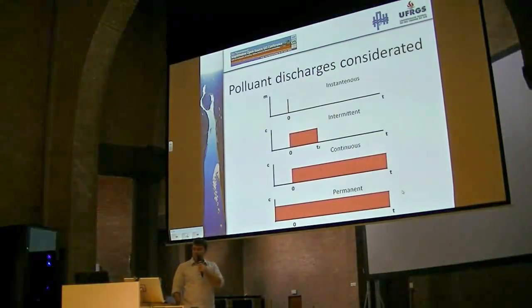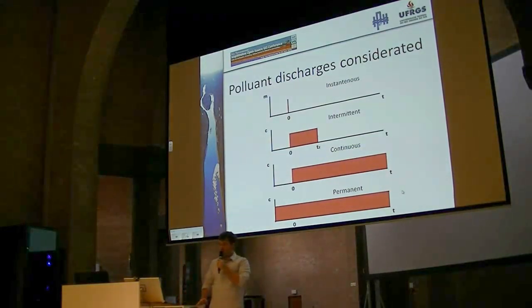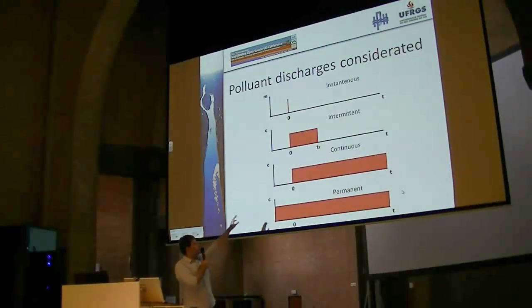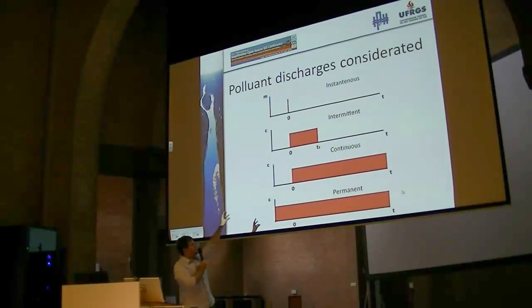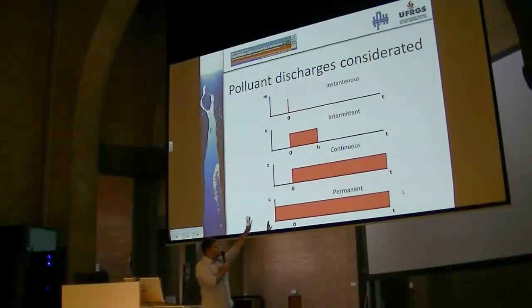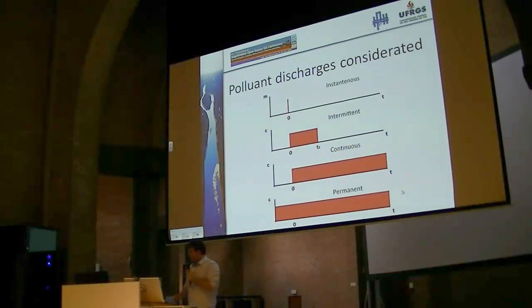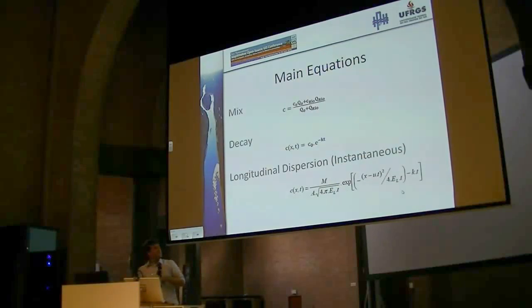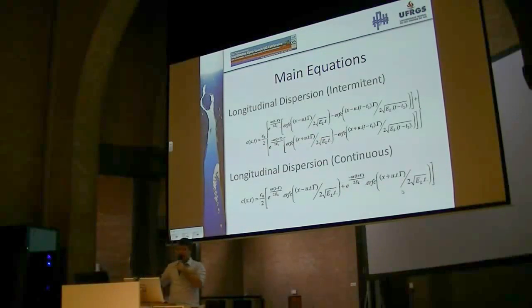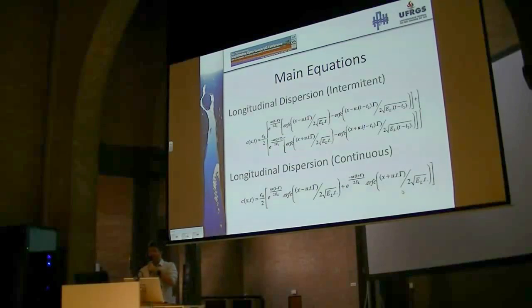These are the kinds of discharge that can be input for a river. It can be a momentaneous discharge or it can have a duration. It can be a continuous discharge starting at time zero and then continuous. Or it can have started in the past and has been present since then. Those are some equations — I'm not going to talk about them, just to show that I know equations. I'm an engineer; I have to show equations in my presentations.